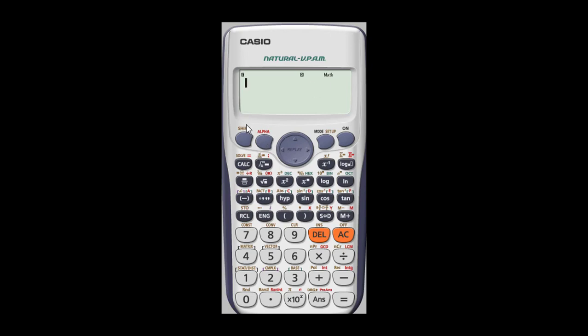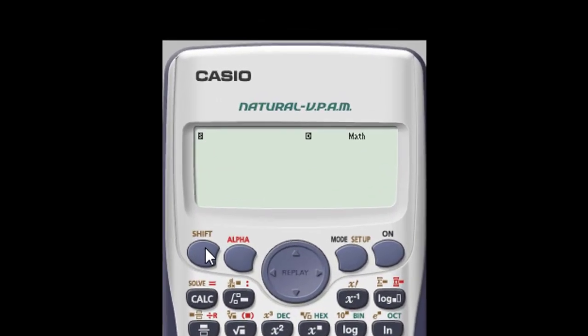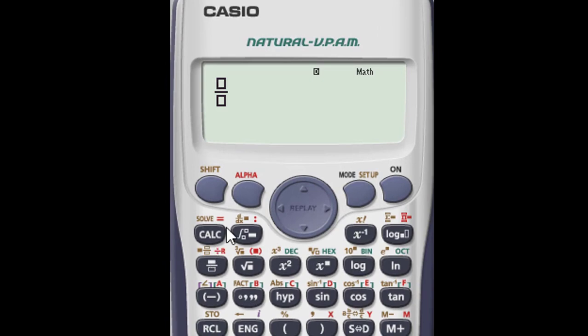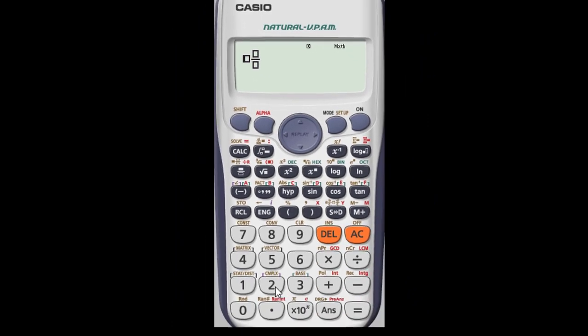For instance, if I want to type a mixed fraction, I press the shift key, then you press that and it appears as a mixed fraction. I can type any fraction, two whole number, then I scroll one over two.